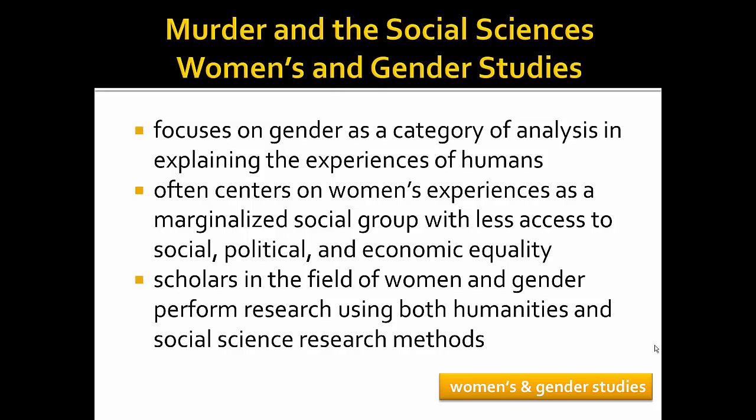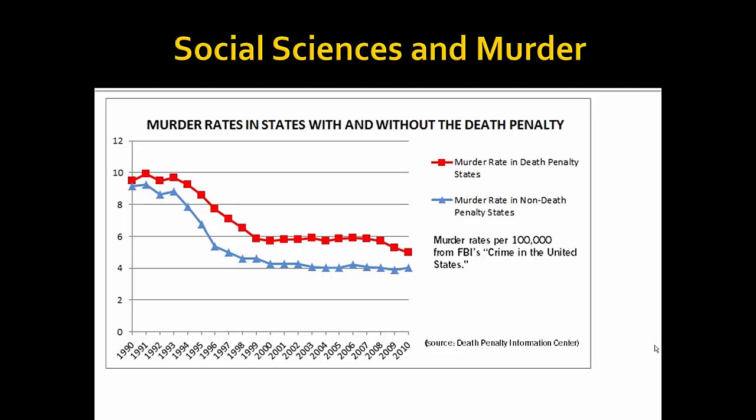Women's and Gender Studies focuses on gender as a category of analysis in explaining the experiences of humans in relationship to gender. This field demonstrates the impact of an individual's gender identity on social, political, and economic realities. Scholars use both humanities and social science research methods. In the case of murder, researchers may investigate the role of murder in intimate partner violence, looking at statistics and experiences collected by gender. To recap, look at this graph showing data collected from public records including the FBI about murder rates. It shows that murder rates are higher in states where the death penalty is in place. This graph offers data in a numerical format but does not try to tell us what the data means. Social scientists use data to theorize about human behaviors, but will interpret the data or ask further questions differently according to their discipline.